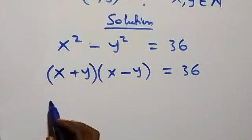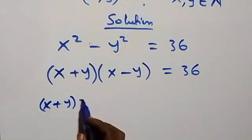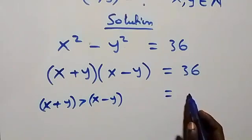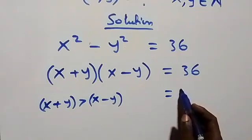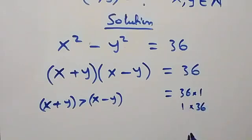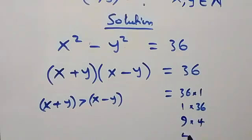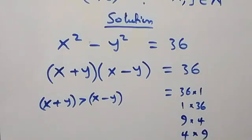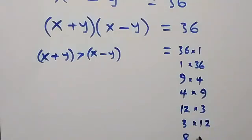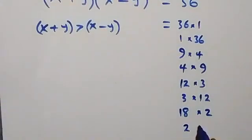We should note that x plus y is greater than x minus y. We can write 36 and list its factor pairs: 36 times 1, 9 times 4, 12 times 3, and 18 times 2 — as well as their reverses: 1 times 36, 4 times 9, 3 times 12, and 2 times 18.